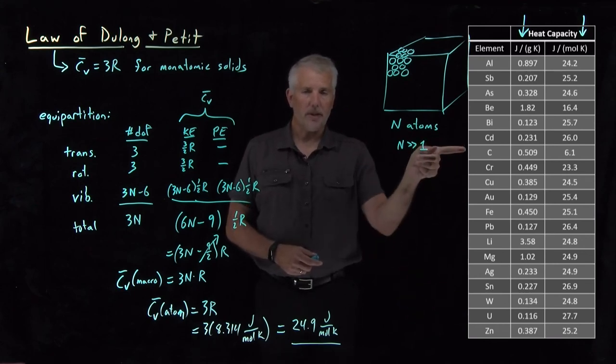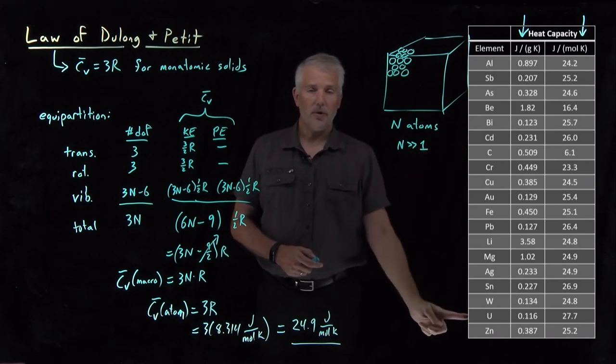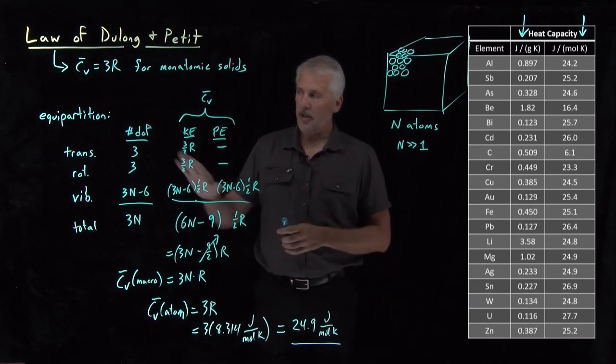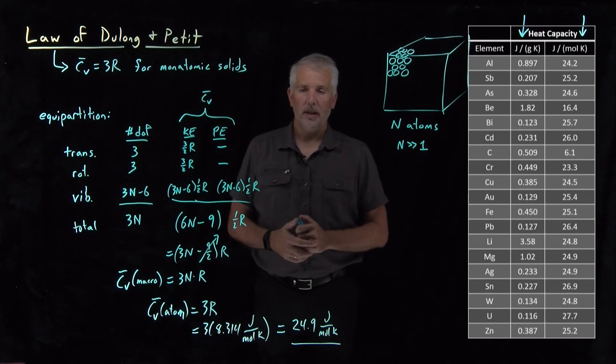So some of these elements have heat capacities that are lower than the law of Dulong and Petit would predict. A few of them have heat capacities that are higher than the law of Dulong and Petit would predict. So we'll be able to do a little better than just the equipartition theorem if we look a little more closely at how solids behave.